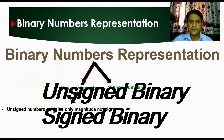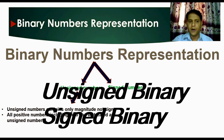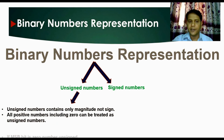Unsigned numbers contain only magnitude but not sign. All positive numbers including zero can be treated as unsigned numbers. If the MSB bit is zero, the number is unsigned.